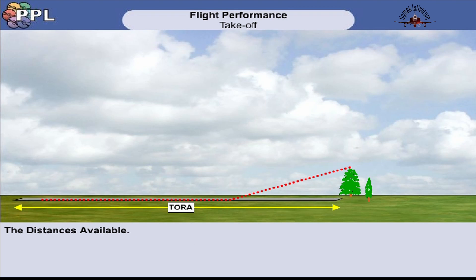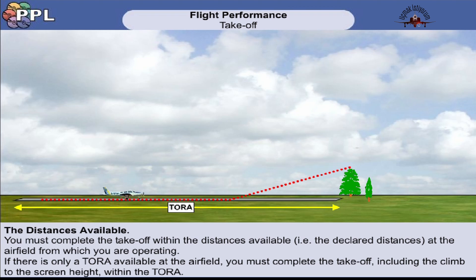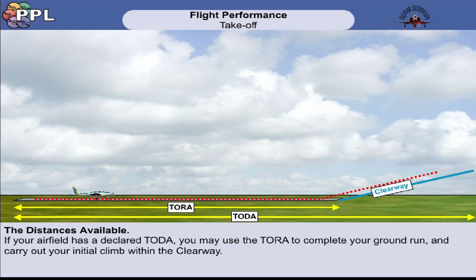What do these distances mean to us as pilots, and how should we use them? If your airfield has only a take-off run available, then you must complete your take-off, including the climb to the screen height, before the end of the runway as shown here. However, if your airfield has a take-off distance available, then you can use the TORA to complete your ground run and do the initial climb within the clearway. Notice that this time there is a greater amount of distance for you to use. But be careful — not all airfields have this clearway, and therefore the take-off run available is the same as the take-off distance available.